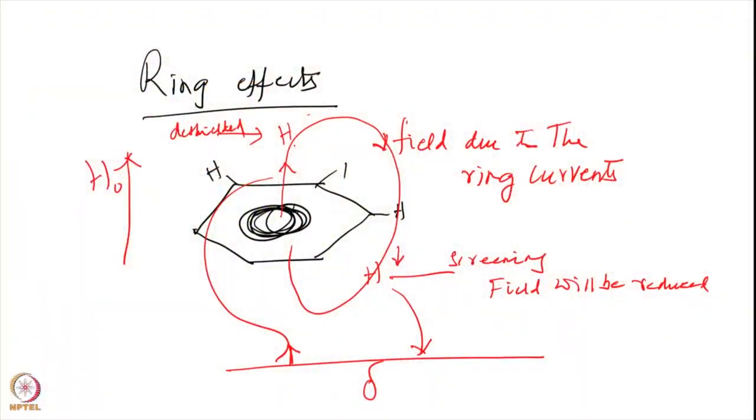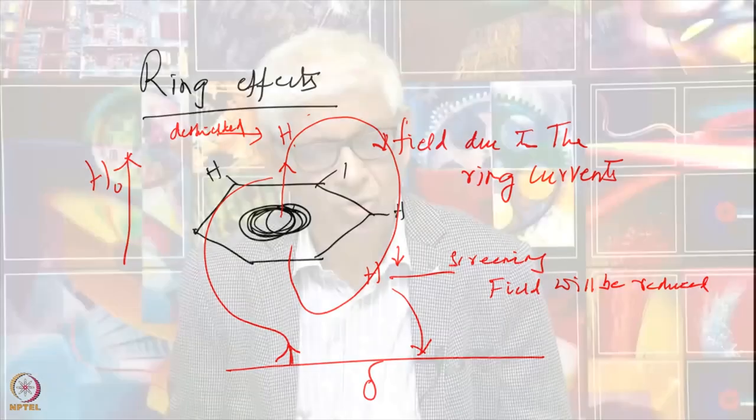This provides an initial input with regard to the structure of the molecule. The same principles apply to other nuclei as well — C-13 shifts, nitrogen-15 shifts — the same principles hold good whether it is a proton shift, carbon shift, nitrogen shift, or phosphorus shift. We will take up the next parameter, spin-spin coupling, in the next class.